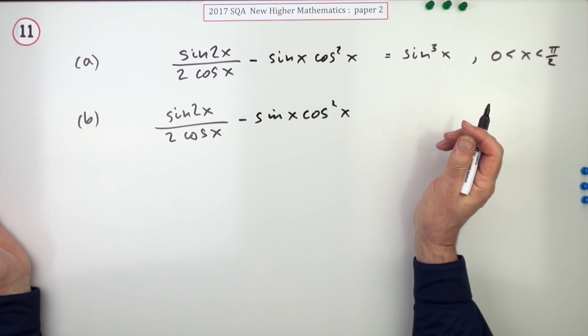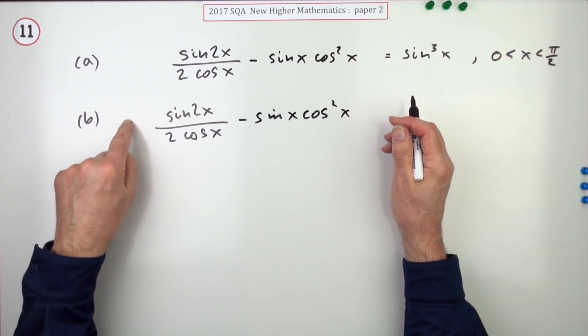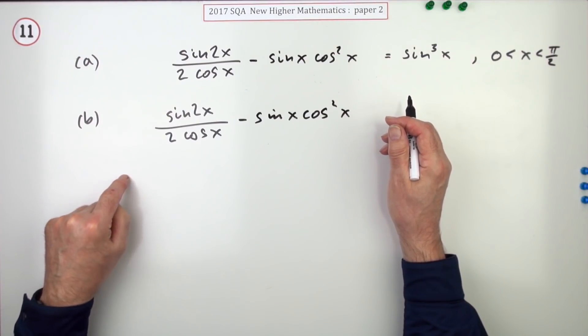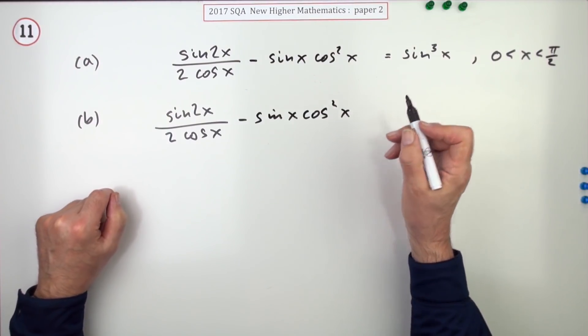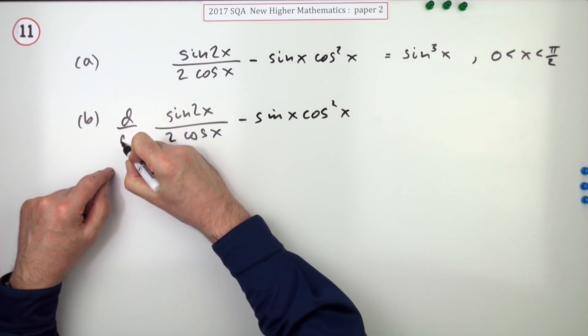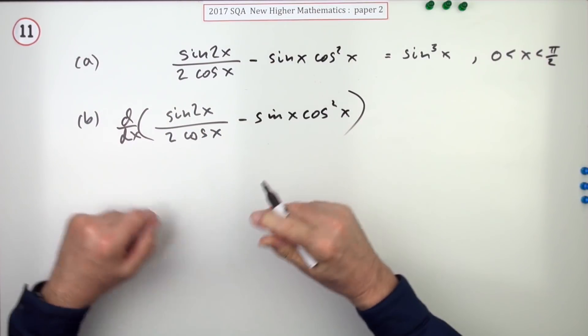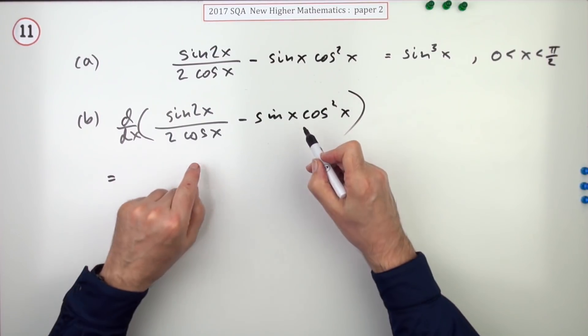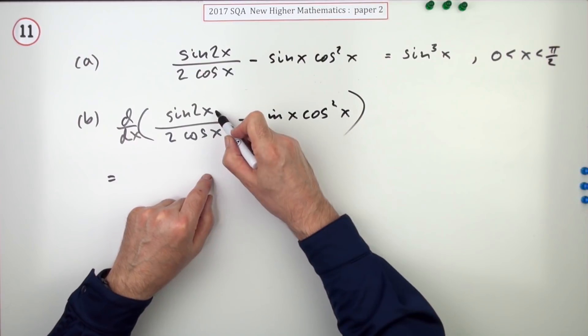You have to say you're differentiating it. So you can either give it a name, f of x equals, y equals, then f dashed or dy by dx. Or you can show it this way: d by dx of it stands for to differentiate this expression.